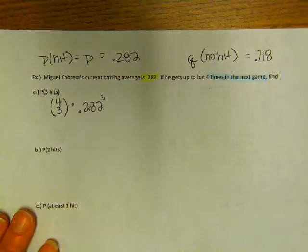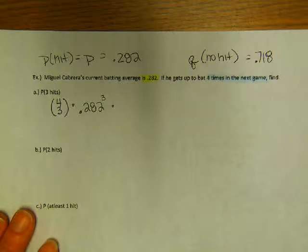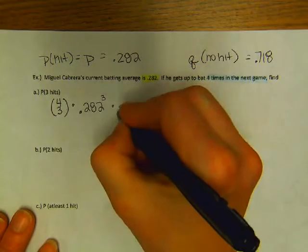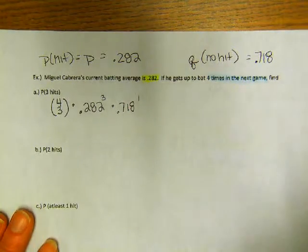Okay, and he doesn't get a hit then once, so times .718 to the first power. Does that make sense? Okay, let's see what we get.